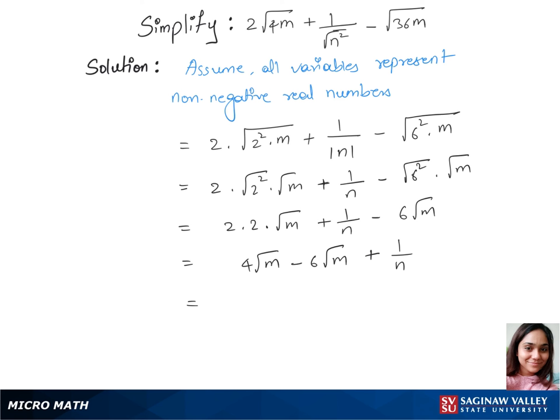Now we have 4 root m minus 6 root m is minus 2 root m plus 1 over n. This is our final answer.